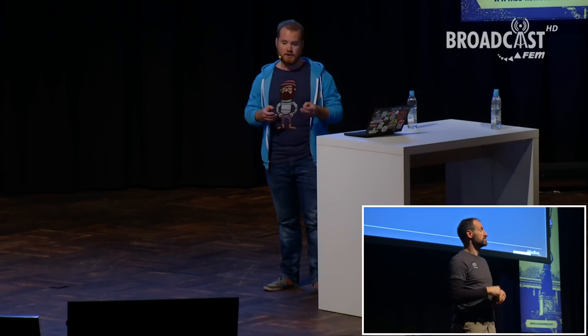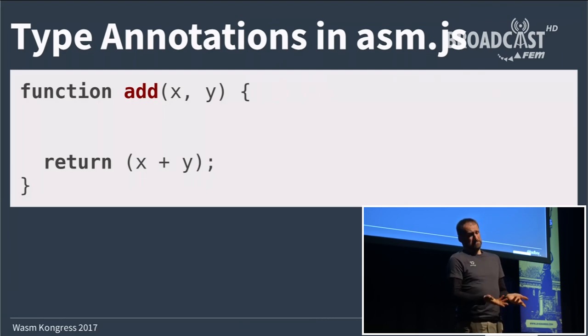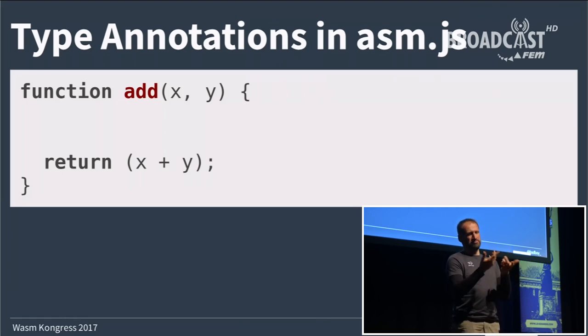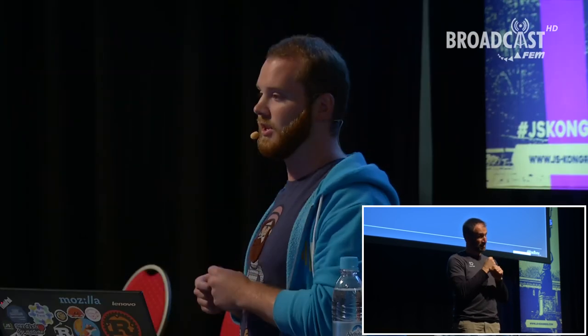Let's look at two features of asm.js that are also relevant to WebAssembly today. Consider a simple JavaScript function 'add' which takes two arguments x and y, adds them together and returns the result. For integers this is simple, but if you put two strings in, the plus operator is defined as concatenation. And if you put in an object or array, things will happen that you don't want.